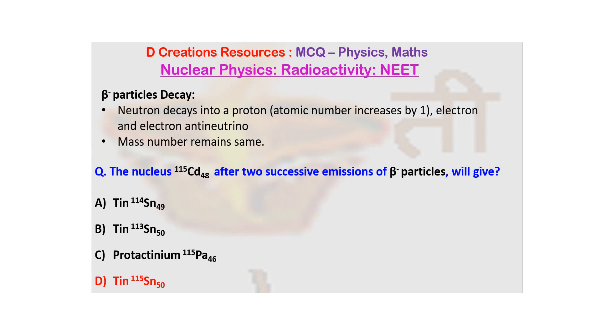So what happens when beta minus particles decay? Basically, a neutron is going to decay into a proton, and hence the atomic number is going to increase by 1 because now there is an additional proton. There is going to be emission of an electron and electron antineutrino. Now when you say this, you have to be very careful in the sense that usually when we talk about electrons they are outside the nucleus.